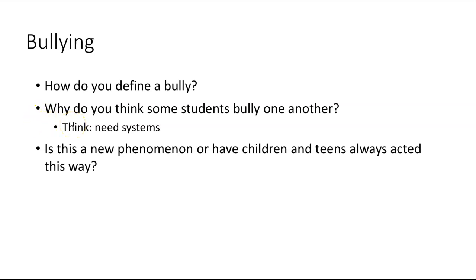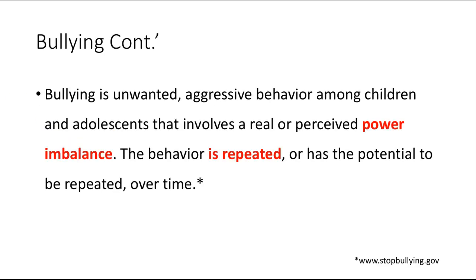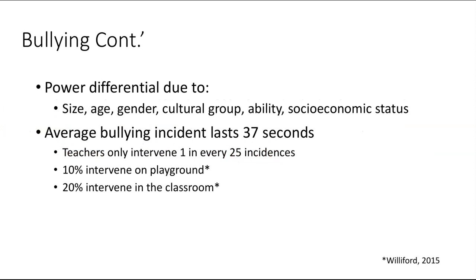We want to think about: is this something that has always happened? Have children and teens always acted this way, or is this something new — is this just the internet age? When we think about bullying, we define it as unwanted aggressive behavior among children and adolescents that involves a real or perceived power imbalance. We're really focused on that power imbalance — those structural components where there is inequity. The behavior is repeated or has the potential to be repeated over time, so we're focusing on repeated inequities or imbalance in that power.